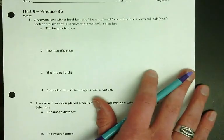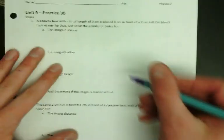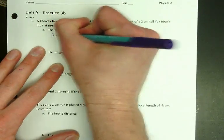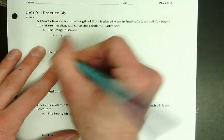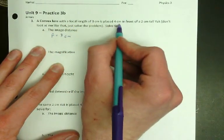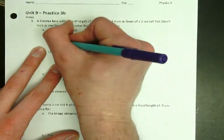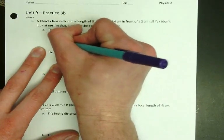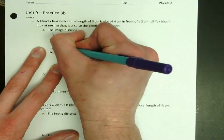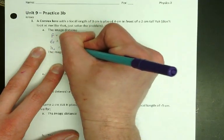Convex lens, so it's got a positive focal length, and we just write down the things that are given. Focal length is 3. The object is 4 centimeters in front of the mirror, so DO is 4 centimeters, and the object is 2 centimeters tall, so that's HO.